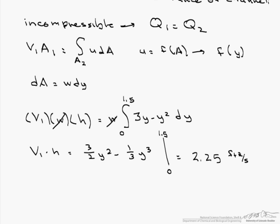So our h is that 2.25 feet squared per second divided by our uniform velocity, which is 2 feet per second, and our height at the entrance of the channel is 1.125 feet.